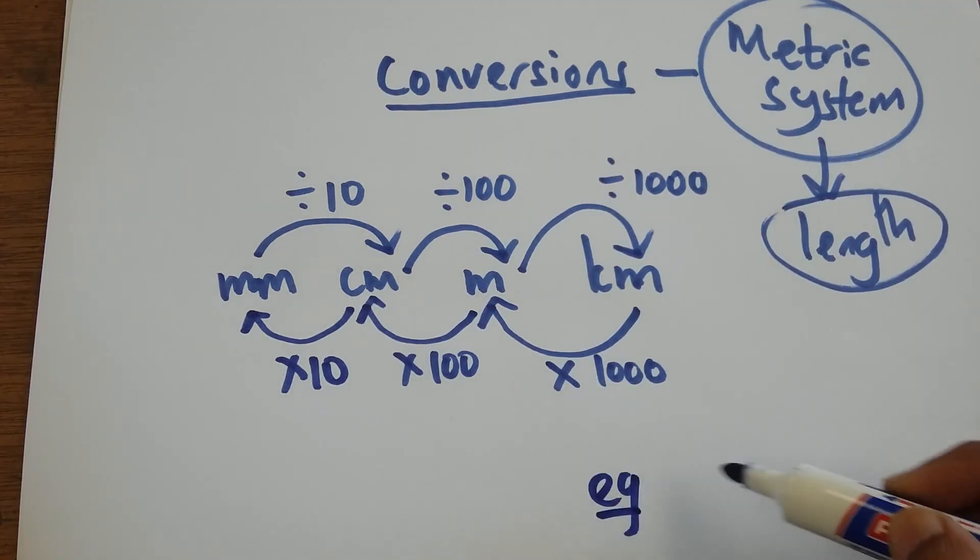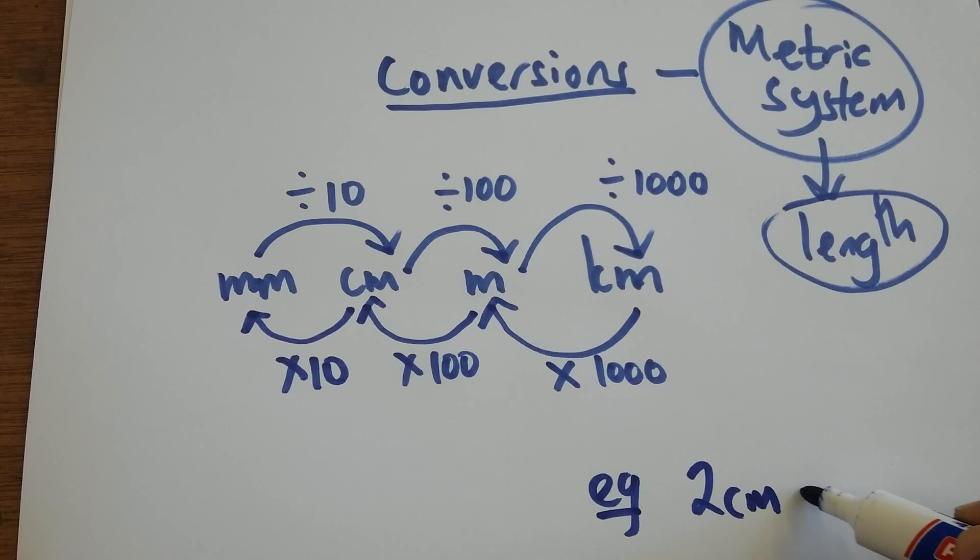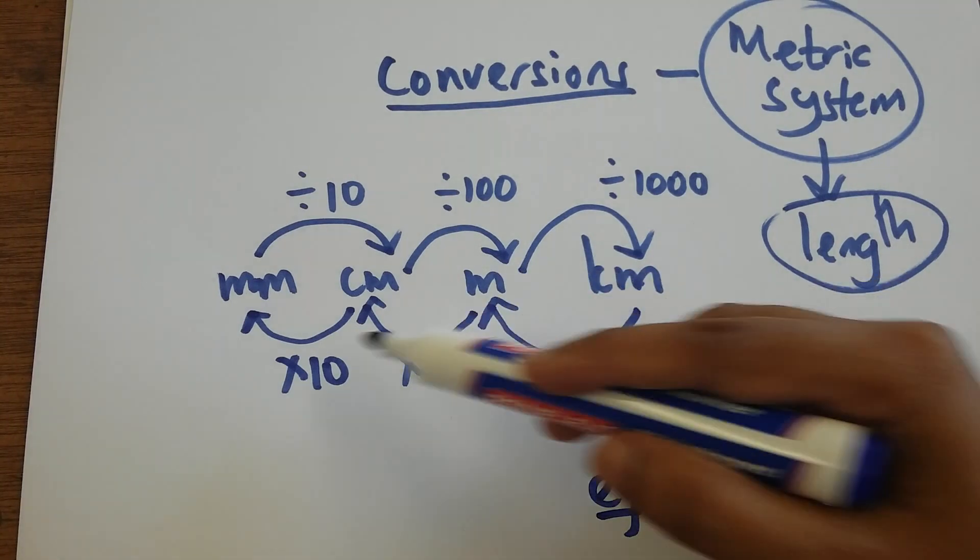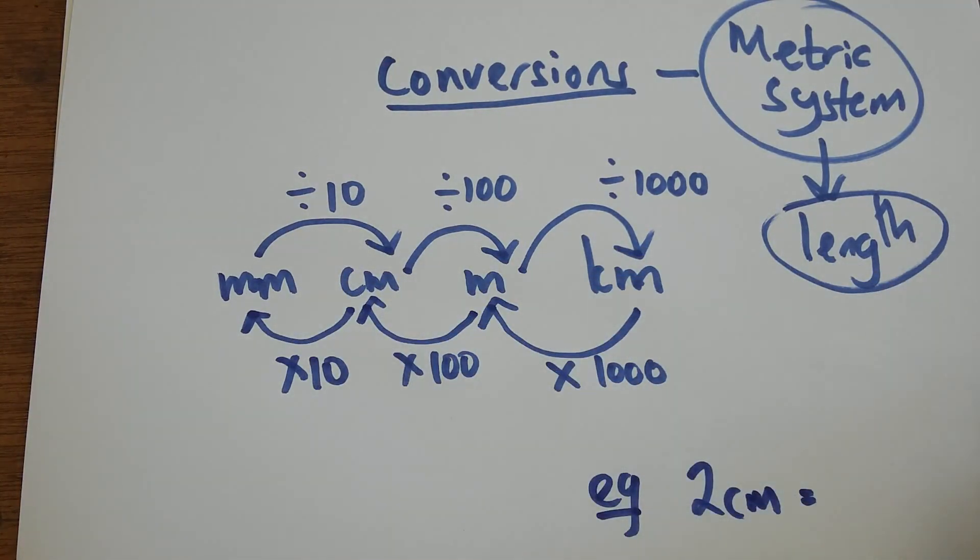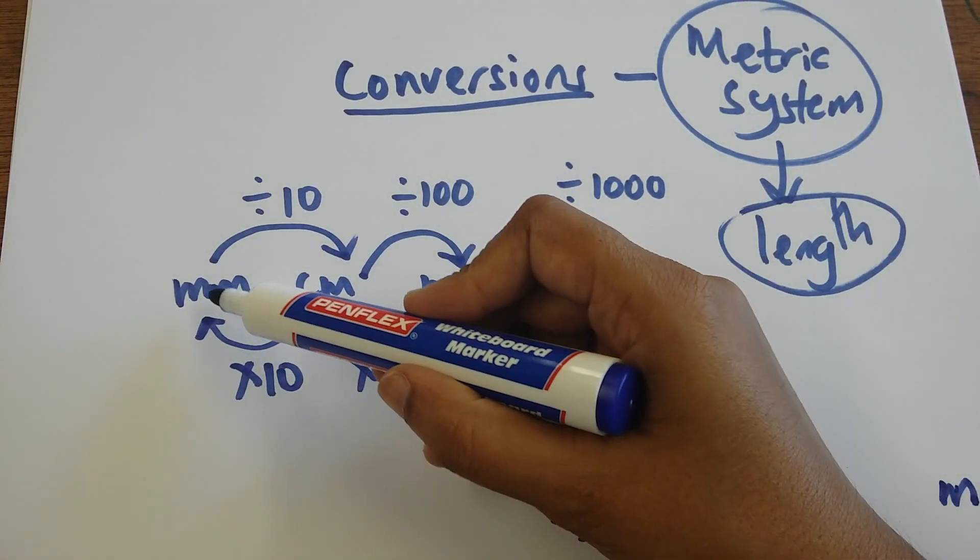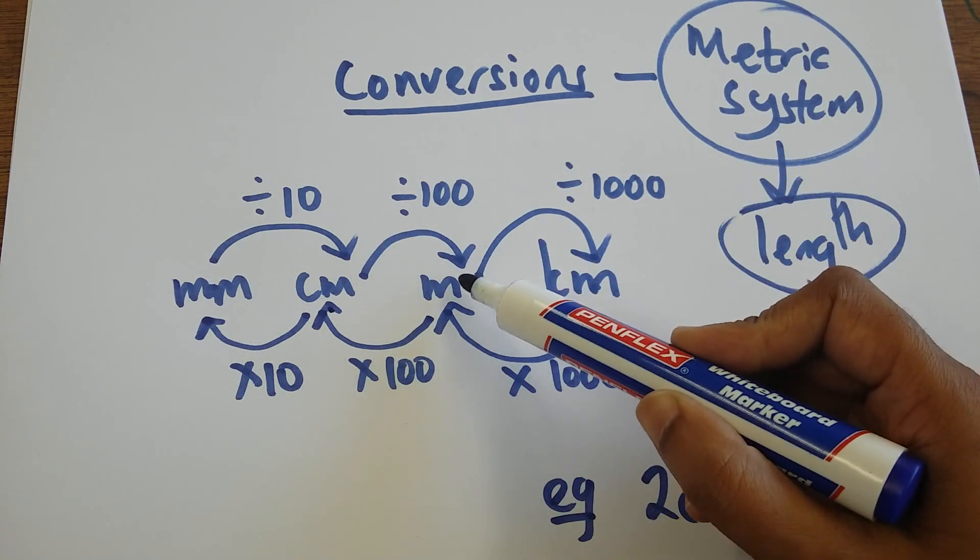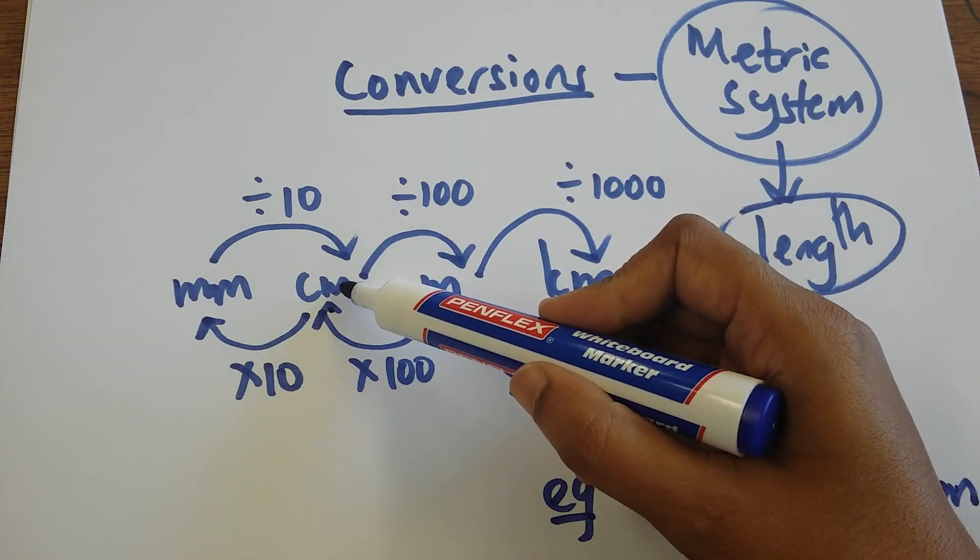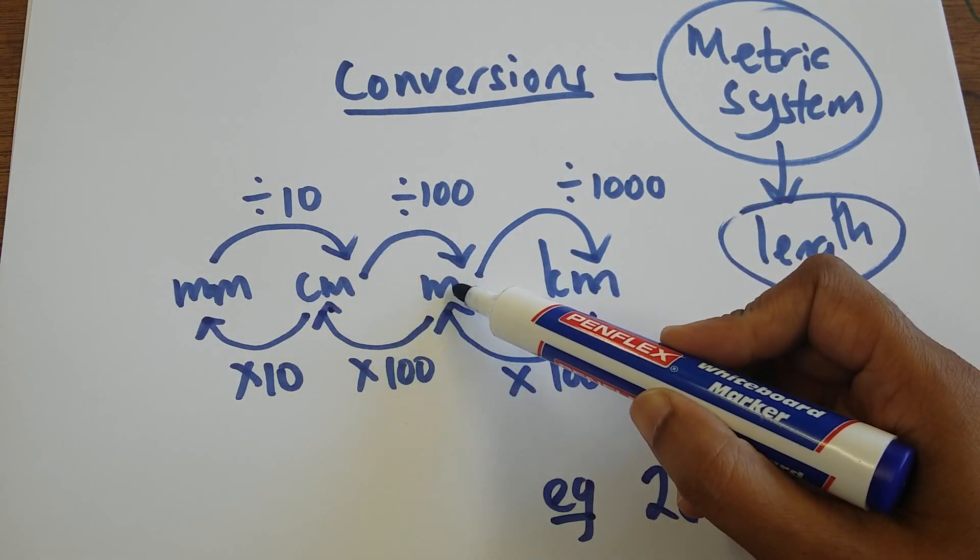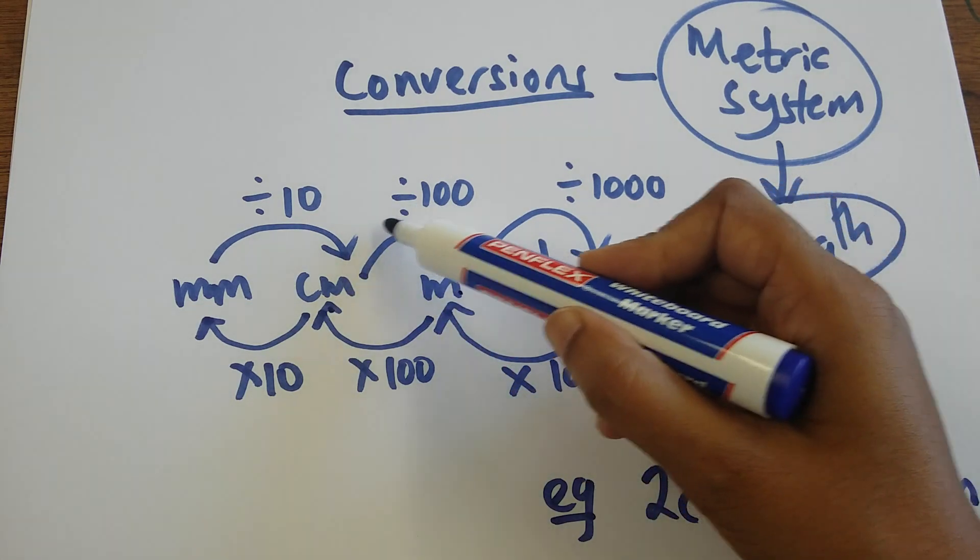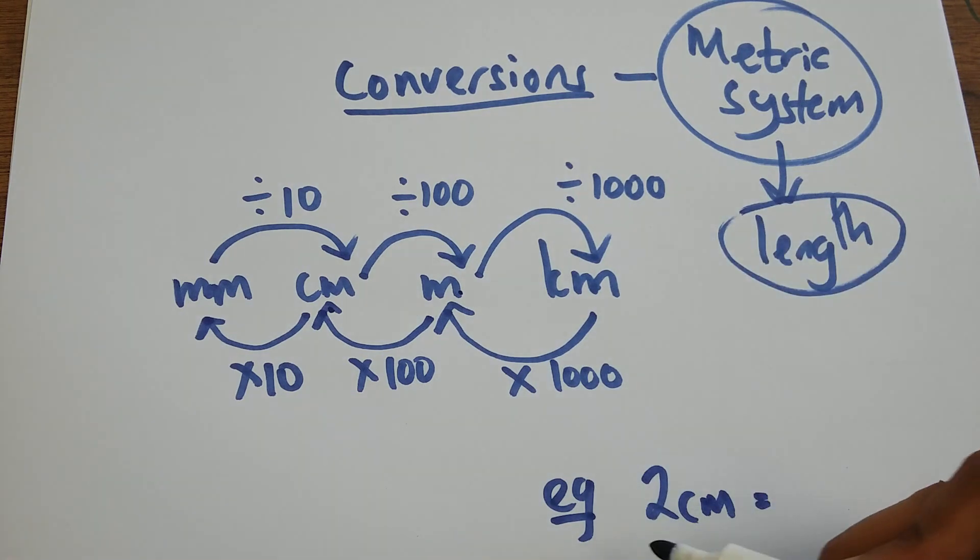We'll take one example. I have 2 centimeters. I want to convert it into meters. The first thing I do is go to my conversion and decide which direction I'm going in. I'm going from centimeter to meter, which means I will divide by 100.